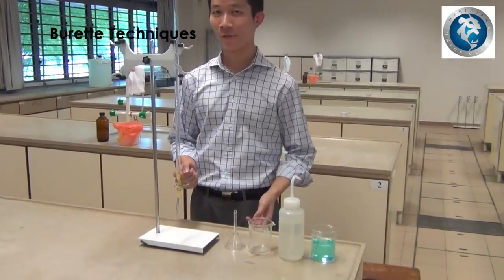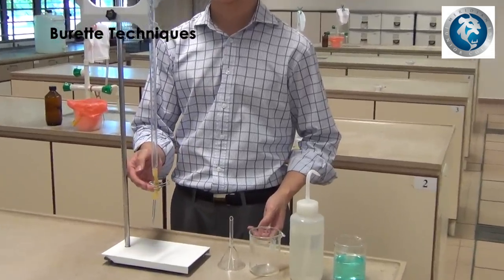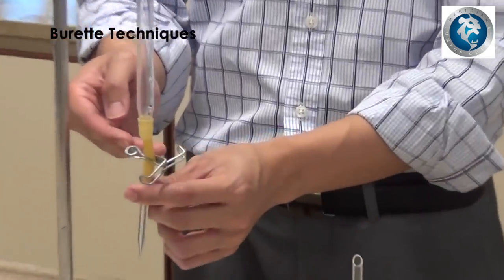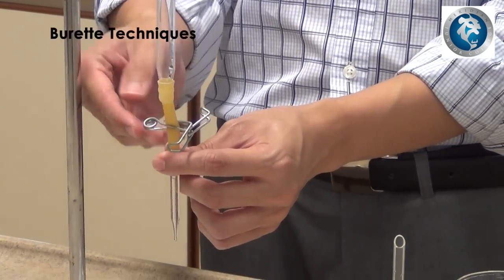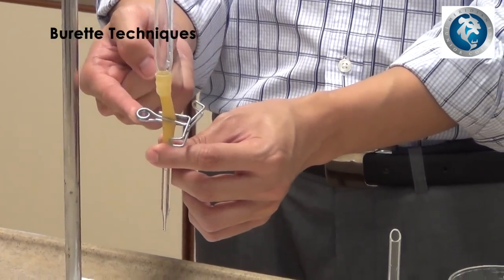First, you will have to clip the burette clip onto the burette. Make sure that the parts of the clip gripping the burette are as close as possible to the ring of the clip.